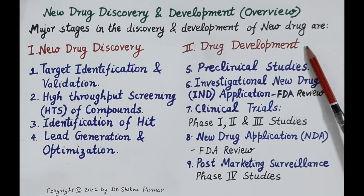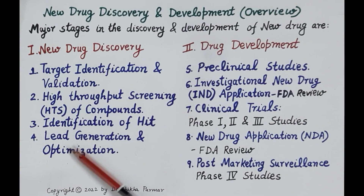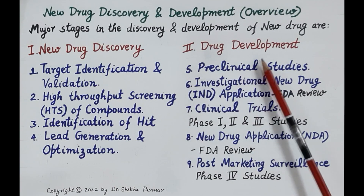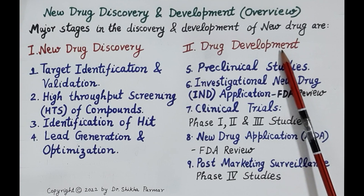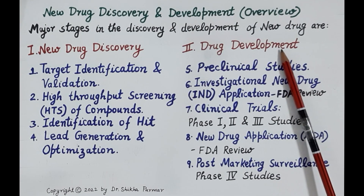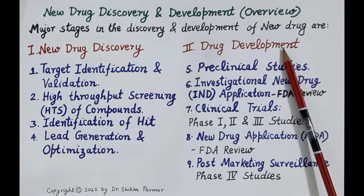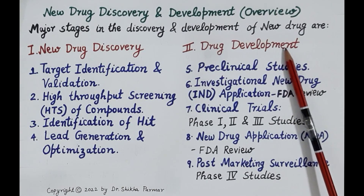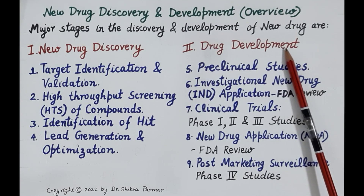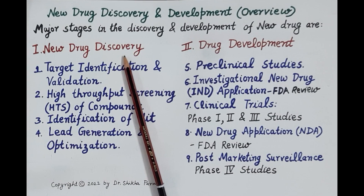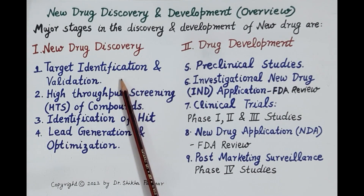Drug development is the process of further screening and evaluating lead compounds generated during drug discovery. Lead compounds are further evaluated and screened in animals and human beings so that a new, safe, and effective drug can be identified. Its suitable formulation and dosage forms are developed, indications are decided, and if the new drug is approved by the FDA, it is manufactured on a large scale and launched in the market.